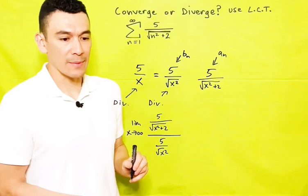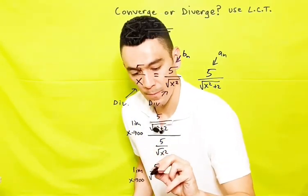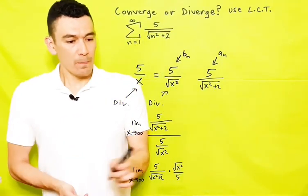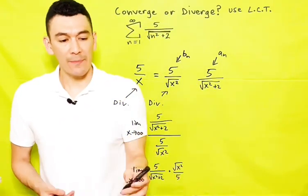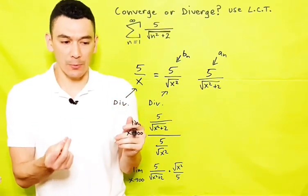We can multiply by a reciprocal. The fives go away. We have a square root sitting on top of a square root, so you could blend them into a single square root expression.